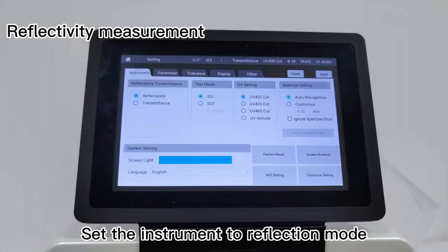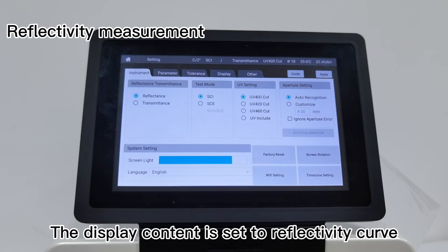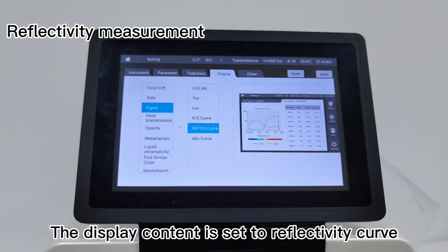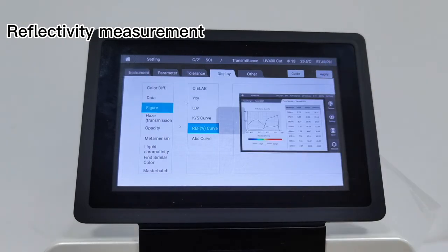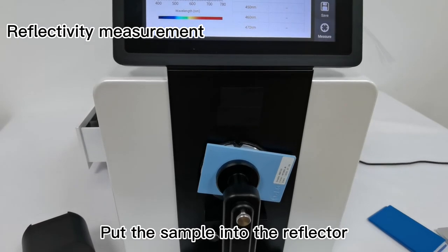Reflectivity measurement: Set the instrument to reflection mode. The display content is set to reflectivity curve. Put the sample into the reflector and carry out reflectivity measurement.